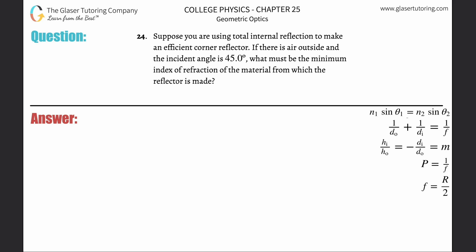Number 24: Suppose you are using total internal reflection to make an efficient corner reflector. If there is air outside and the incident angle is 45 degrees, what must be the minimum index of refraction of the material from which the reflector is made? This is all about critical angle. Check out number 20.